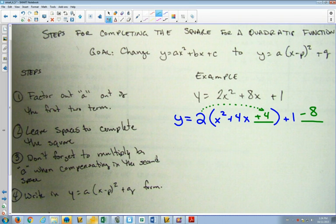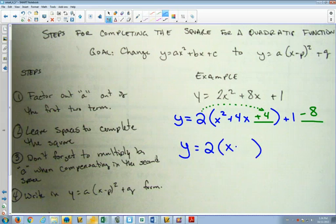The reason we do this is now this part in the brackets becomes x plus 2 squared. And my numbers outside the bracket becomes minus 7. And now we have it in standard form. Now we know that the vertex is at minus 2, minus 7.